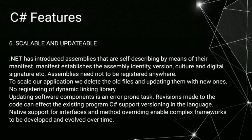6. Scalable and updatable. .NET has introduced assemblies that are self-describing by means of their manifest. The manifest establishes the assembly identity, version, culture, and digital signature. Assemblies need not be registered anywhere. To scale our application, we delete the old files and update them with new ones. No registering of dynamic linking library is needed. Updating software components is an error-prone task; revisions made to the code can affect existing programs. C sharp supports versioning in the language. Native support for interfaces and method overriding enable complex frameworks to be developed and evolved over time.